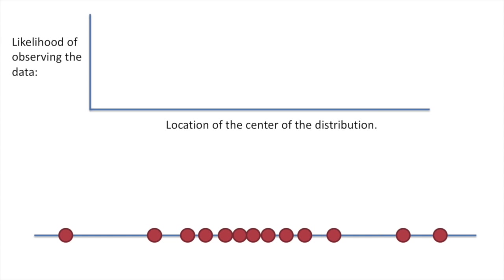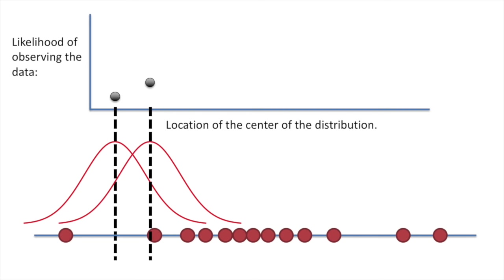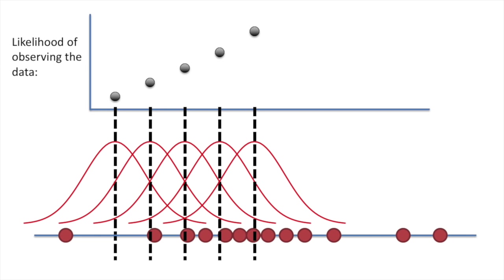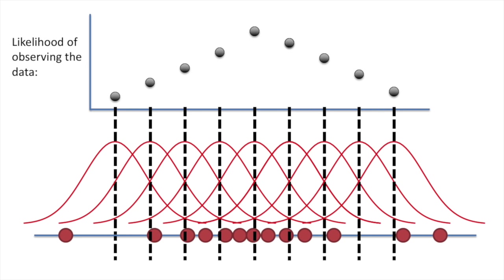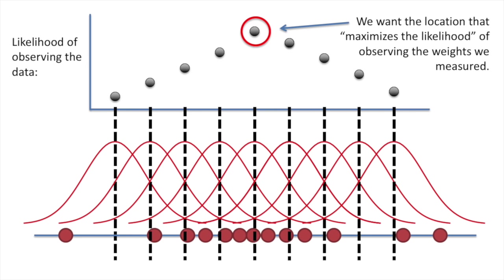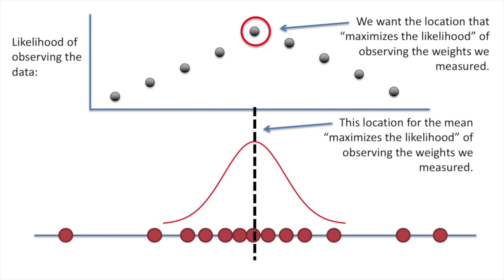We can plot the likelihood of observing the data over the location of the center of the distribution. We start on the left side and we calculate the likelihood of observing the data, and then we shift the distribution to the right and recalculate. We just do this all the way down the data. Once we've tried all the possible locations we could center the normal distribution on, we want the location that maximizes the likelihood of observing the weights we measured. This location for the mean maximizes the likelihood of observing the weights we measured. Thus, it is the maximum likelihood estimate for the mean.